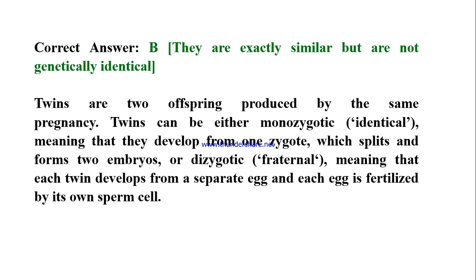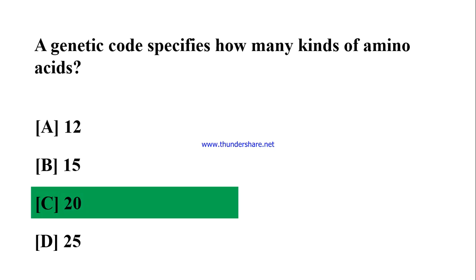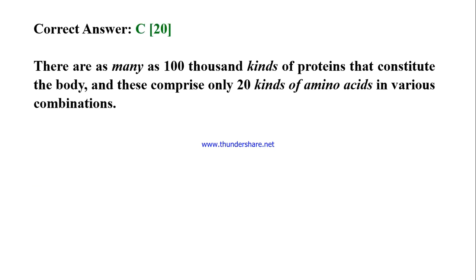A genetic code specifies how many kinds of amino acids? A) 12, B) 15, C) 20, D) 25. Correct answer: C) 20. There are as many as 100,000 kinds of proteins that constitute the body, and these comprise only 20 kinds of amino acids in various combinations.